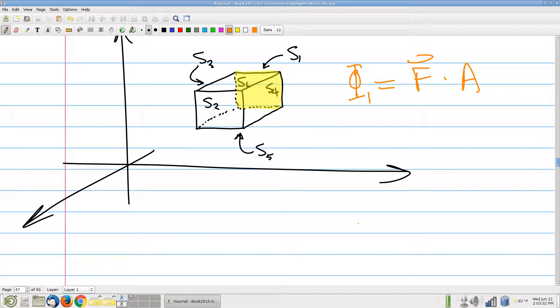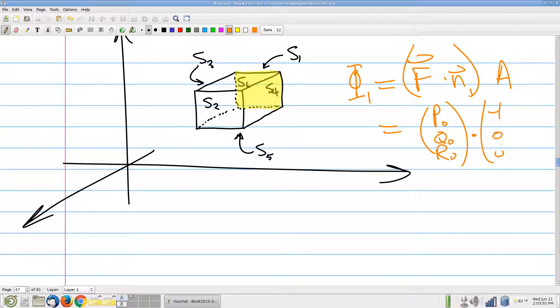So the vector field is P naught, Q naught, R naught. Oh, I'm sorry, F dot N times A. Sorry, I spaced there. I was thinking in a dS sense of the word. So P naught, Q naught, R naught dot, now the normal vector was negative 1, 0, 0. And then the area was delta y, delta z. And so phi 1 is minus P naught delta y delta z. Anybody happy? Okay.